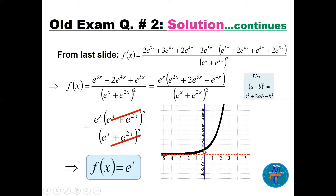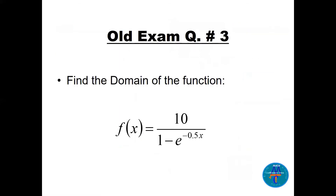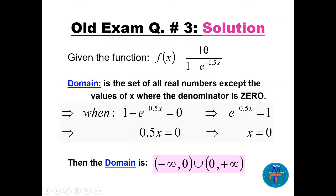Question three: find the domain of f(x) = 10 / (1 − e^(−0.5x)). This is a rational function, so the domain is all real numbers except where the denominator equals zero. Set 1 − e^(−0.5x) = 0, so e^(−0.5x) = 1, meaning the power −0.5x = 0, giving x = 0. We cannot accept x = 0, so the domain is all real numbers except 0, written as (−∞, 0) ∪ (0, ∞).